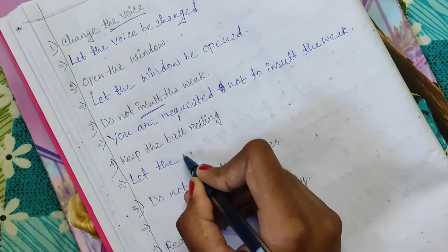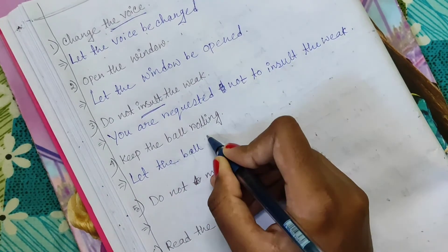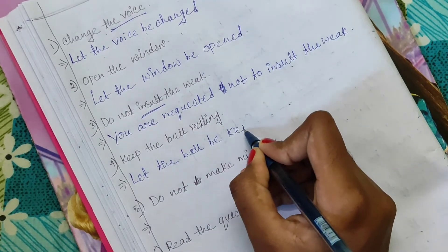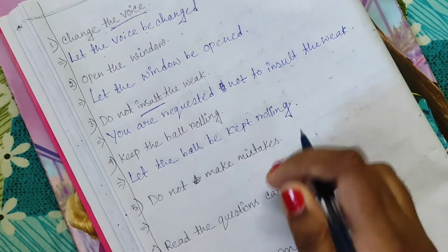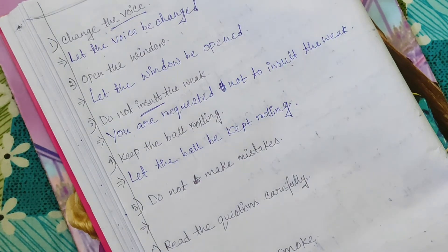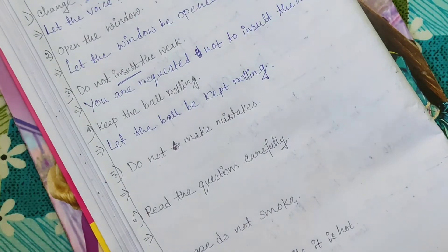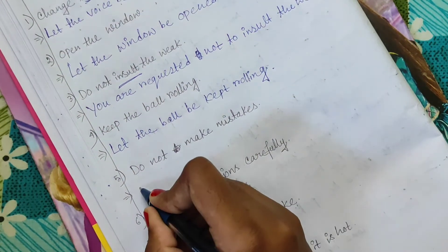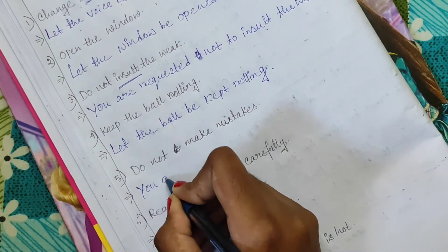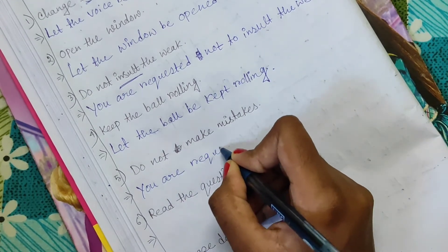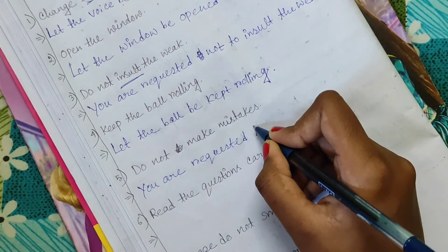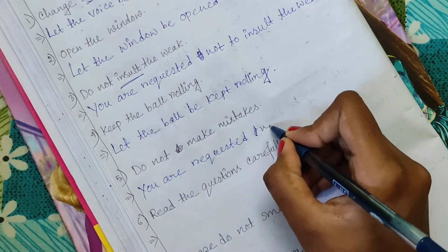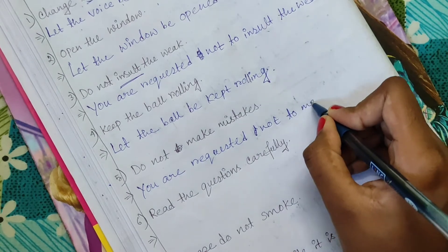Let the ball be kept rolling. Next: do not make mistakes — you are requested, you are requested not to make mistakes.